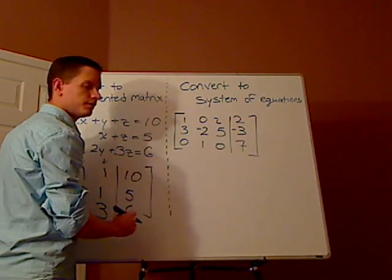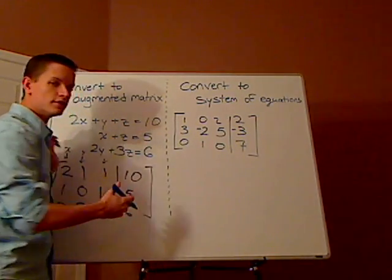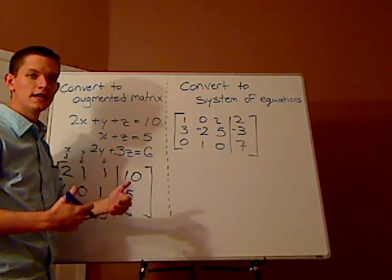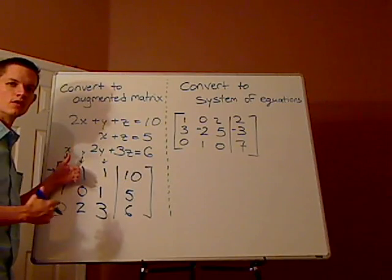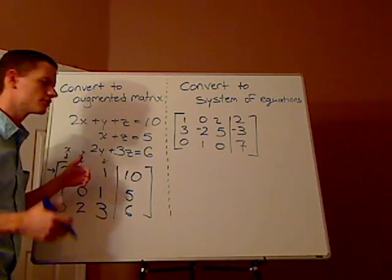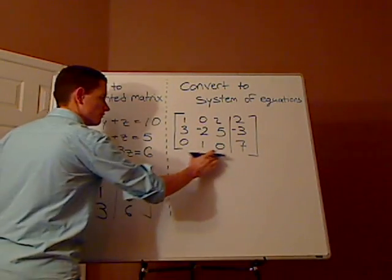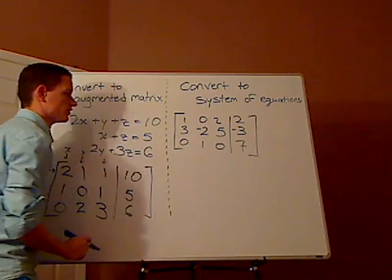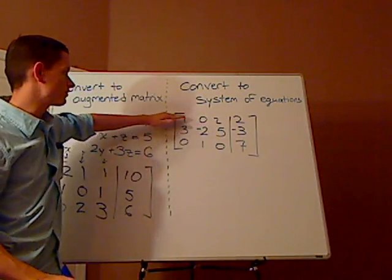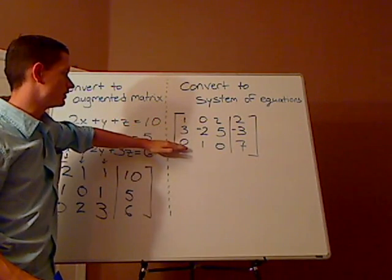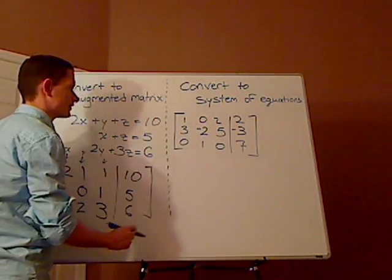For this right here, it's going to be the same thing, but it's going to be the opposite. Instead of starting with a system of equations and going to an augmented matrix, you're going to go from an augmented matrix to a system of equations. So this right here is your first equation, second equation, and third and last equation.